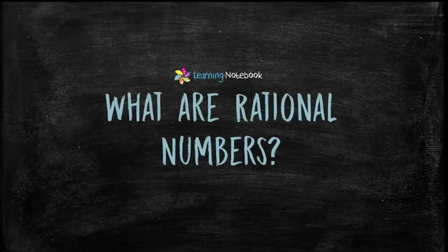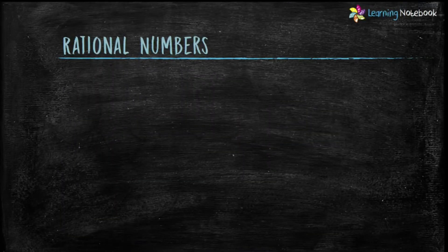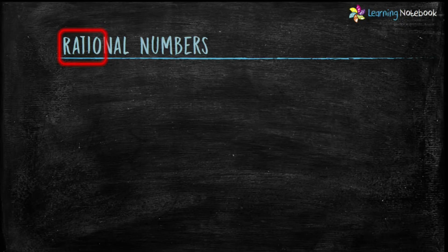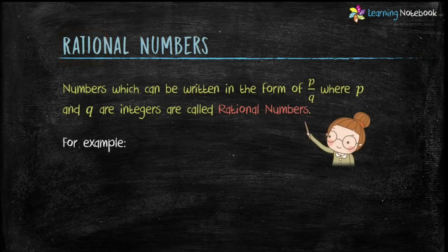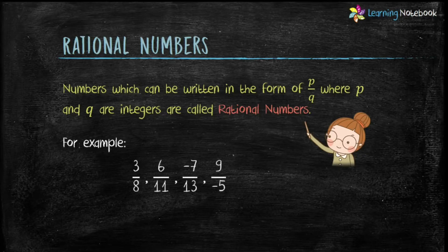Let's start and first see what rational numbers are. The word rational comes from the term ratio. You know ratios like 3 is to 2, 4 is to 5, which can also be written as 3 by 2, 4 by 5. So all numbers which can be written in the form of p by q, where p and q are integers, are called rational numbers. For example, 3 by 8, 6 by 11, minus 7 by 13, 9 by minus 5 — all these are rational numbers.